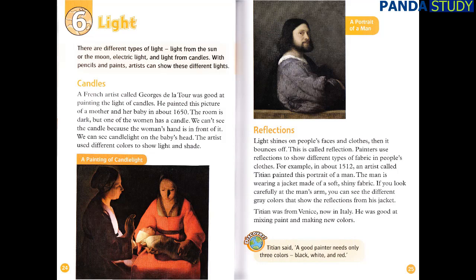Light shines on people's faces and clothes, then it bounces off — this is called reflection. Painters use reflections to show different types of fabric in people's clothes. For example, in about 1512, an artist called Titian painted this portrait of a man. The man is wearing a jacket made of a soft, shiny fabric. If you look carefully at the man's arm, you can see the different grey colours that show the reflections from his jacket. Titian was from Venice, now in Italy, and he was good at mixing paint and making new colours.